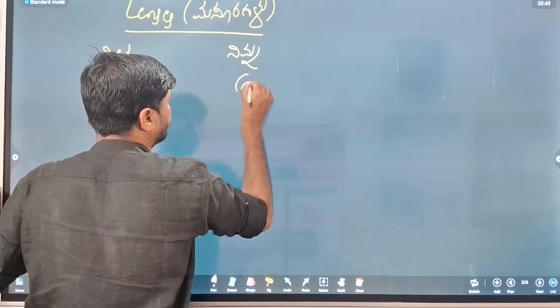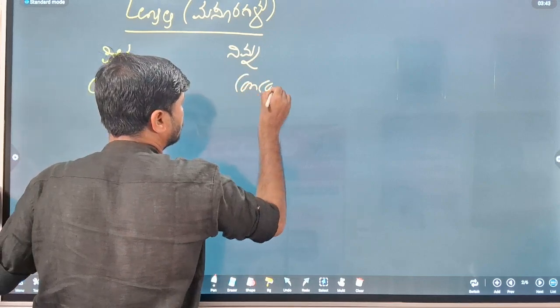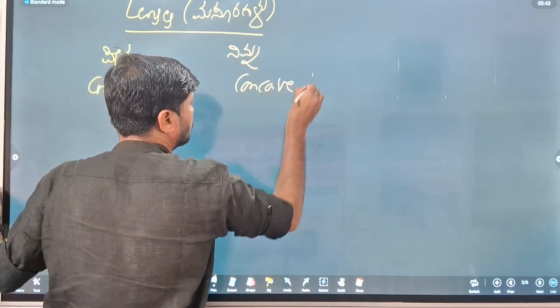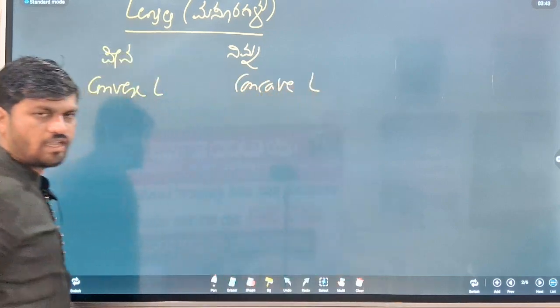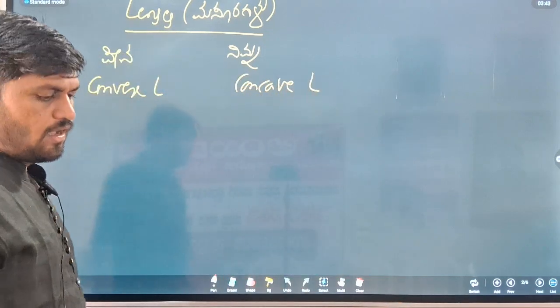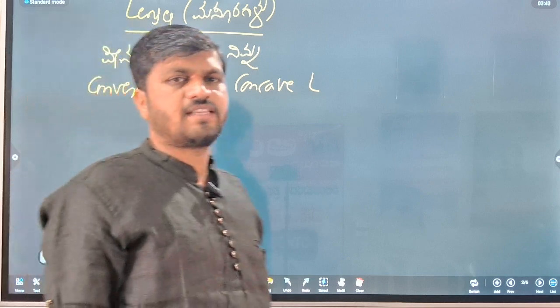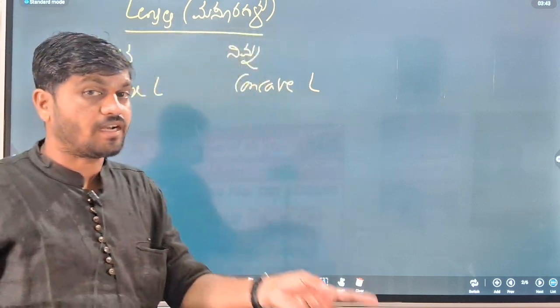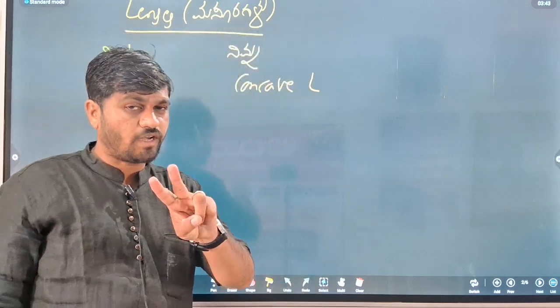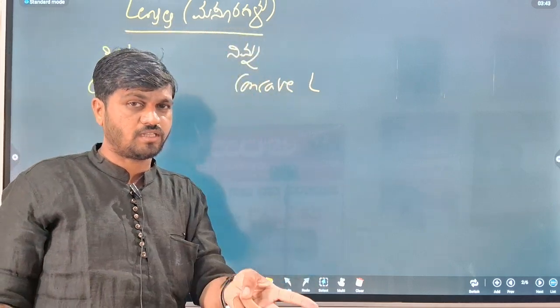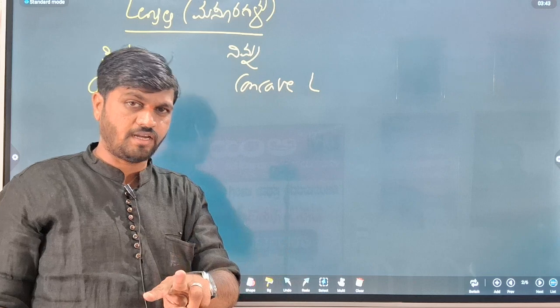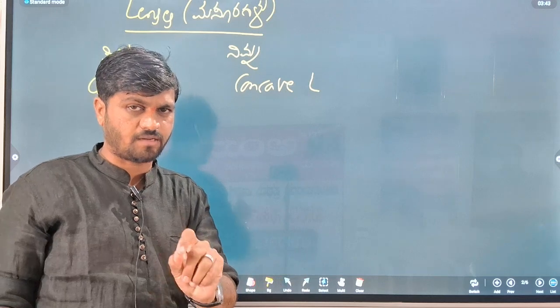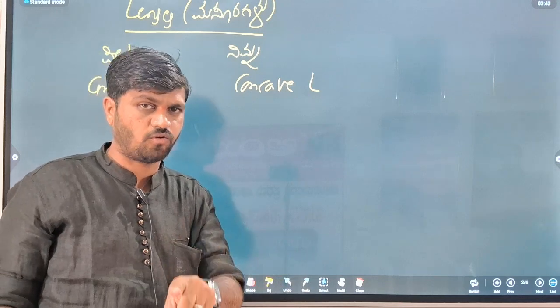Concave lens. Lenses are the transparent materials. Mirrors — one is the concave mirror and the other is the convex mirror.